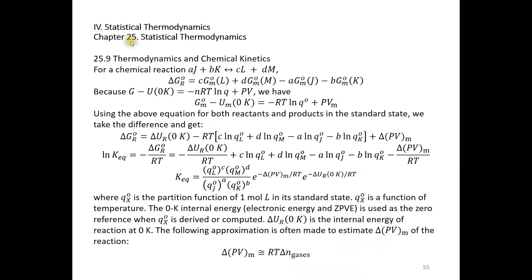Chapter 25 Statistical Thermodynamics, Section 25.9: Thermodynamics and Chemical Kinetics. For a general chemical reaction from reactants J and K to products L and M, assuming the coefficients are A, B, C, and D, we can write out the expression for the standard Gibbs energy of reaction.